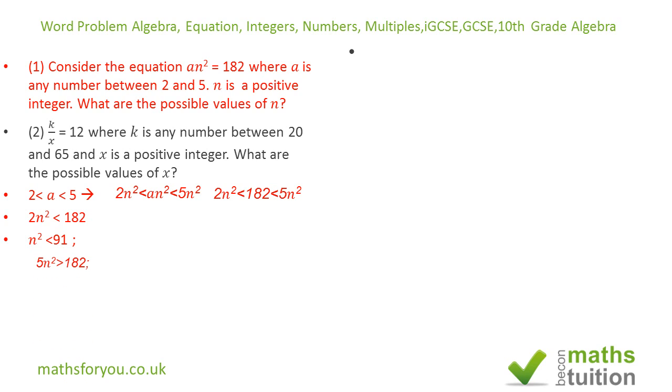Next one: 5n² > 182. Divide both sides by 5, we get n² > 182/5, which is 36.4.